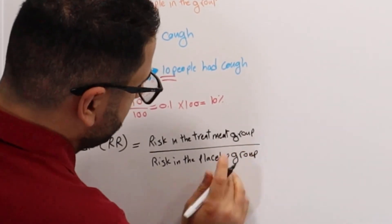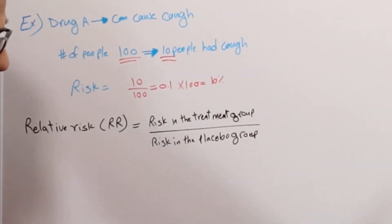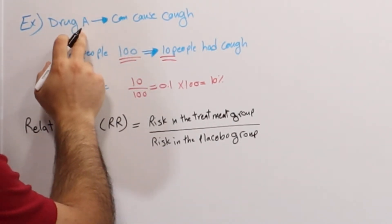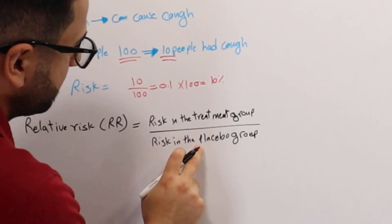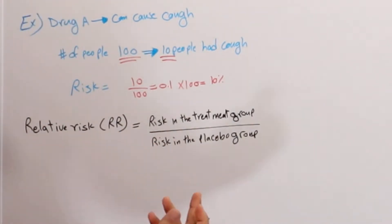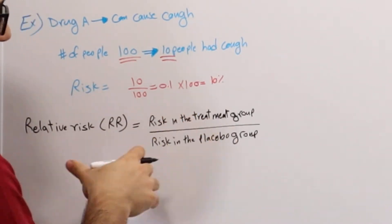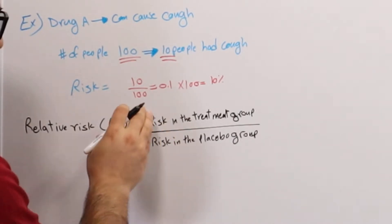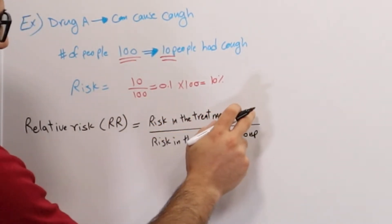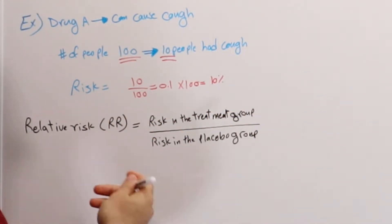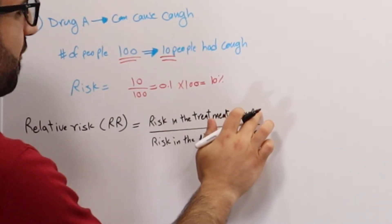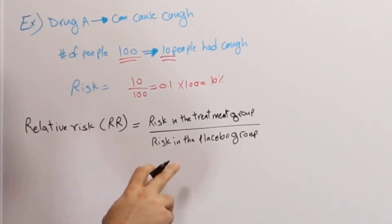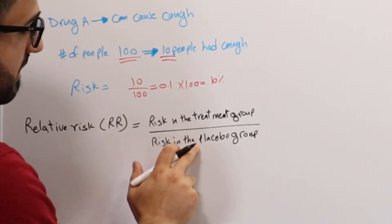Now this doesn't need to be a placebo — it could be a drug that already exists in the market. We're comparing our drug, Drug A, which is the new drug, to the one that already exists. We're trying to see which of them causes more cough — does Drug A have a higher risk of causing cough, or does the one already on the market cause more cough?